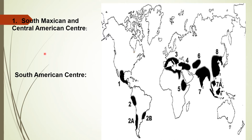The South Mexican and Central American center includes North America, Mexico, and the West Indian islands. Staple plants such as maize, cotton, bean, pumpkin, cocoa, avocado, and subtropical fruits originated here. About eight percent of the important crops of the world originated here.